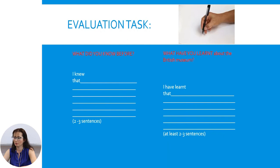Now let us go to an evaluation task. What did you know before? What have you learnt about the British Museum today? Take a pen and write the answers. 'I knew that...' — two free sentences, please. 'I have learnt that...' — write in two free sentences.